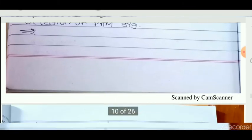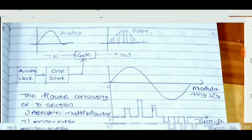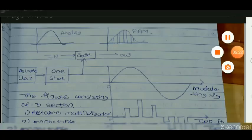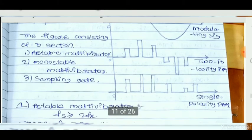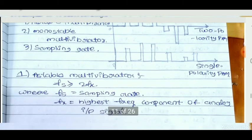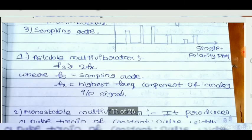Generation and detection of PAM. The above figure shows the generation of PAM. The figure consists of a modulating signal and two-polarity PAM. It consists of three sections: an astable multivibrator, a monostable multivibrator, and a sampling gate. The astable multivibrator has sampling rate Fs greater than or equal to 2Fx, where Fs is the sampling rate and Fx is the highest frequency component of the analog input signal.